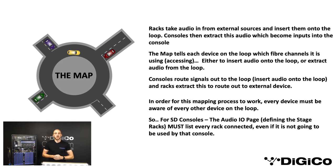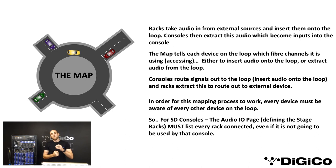In order for this mapping to work effectively, every device must be aware of every other device on the loop. So for example, SD consoles within the audio IO page — all consoles on that loop must list every rack connected. The optical system needs to know where all your signals are currently positioned. That can be broken down into simpler terms via that little roundabout we can see on the left hand side. The roundabout is the loop — that's our optic loop. Each junction can be treated as a connecting device. And then the cars, as you can see, are the individual signals. So all devices know where the signals are going within the optical loop.